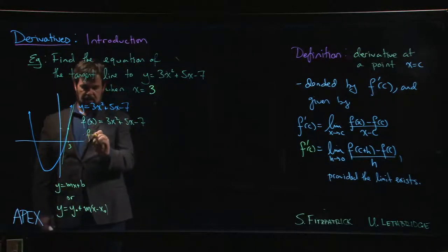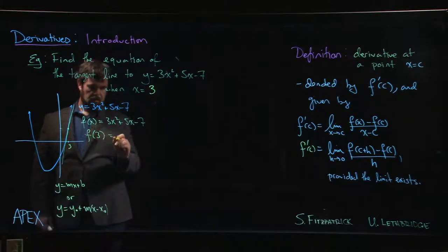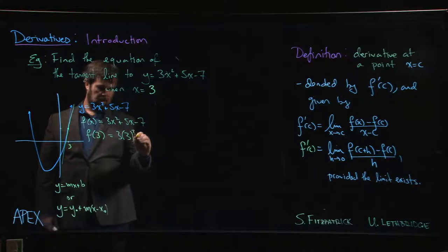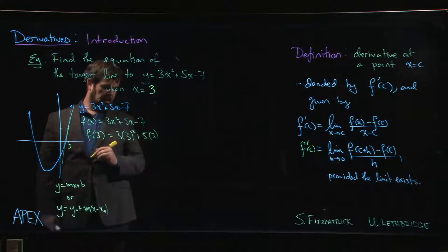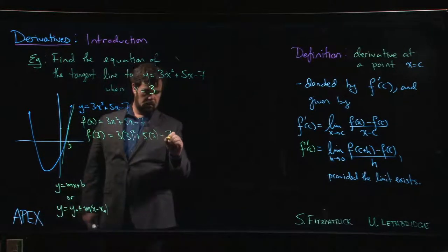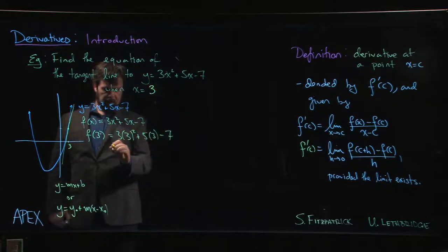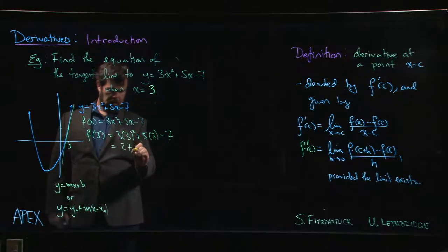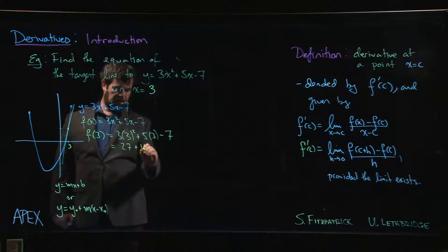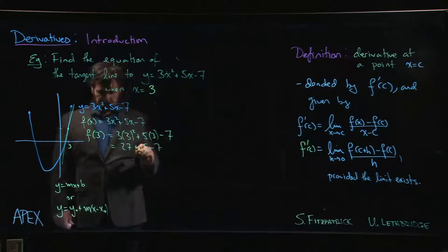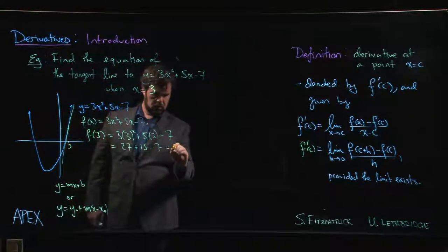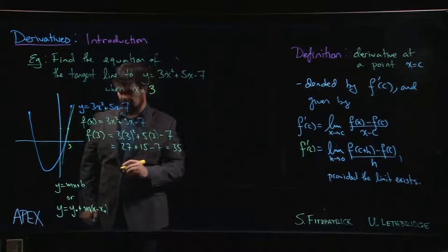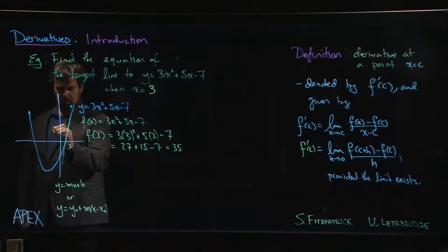Anyway, so this time we need f of 3. So we have 3 times 3 squared plus 5 times 3 minus 7, so much bigger number this time. 27 plus 15 minus 7, we have 35. Okay, so y value is 35 this time.